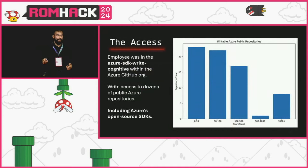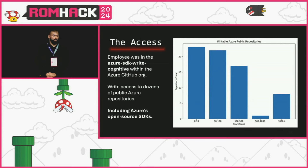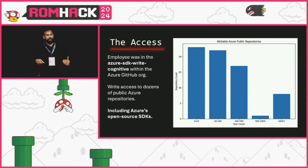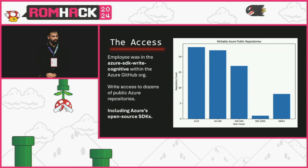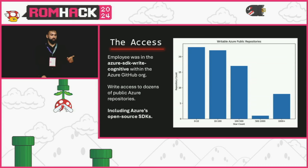What access did I have and what could I do with it? Here's a breakdown of repositories with various star counts that this token had access to. There were a lot of public repos, and most interestingly, all of Azure's open source SDKs fell within that — due to a certain team membership that the user had.